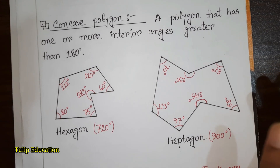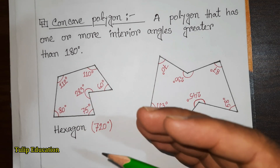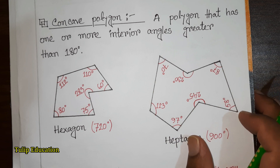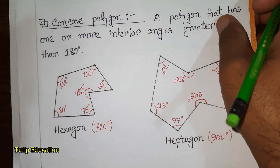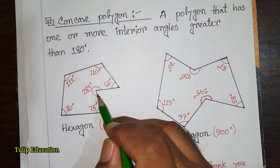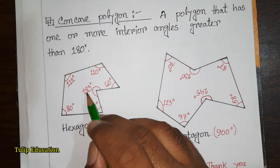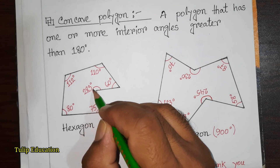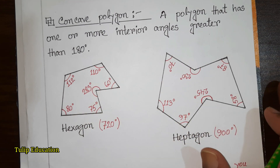According to the definition of a concave polygon, one or more interior angles will be greater than 180 degrees. In this hexagon, we can see one interior angle — especially this one — is greater than 180 degrees and it measures 283 degrees. The other interior angles are less than 180 degrees.